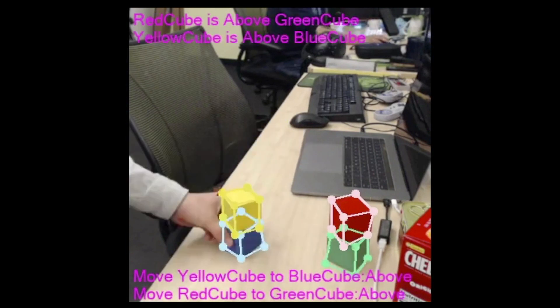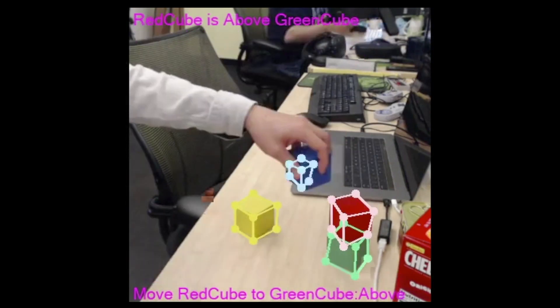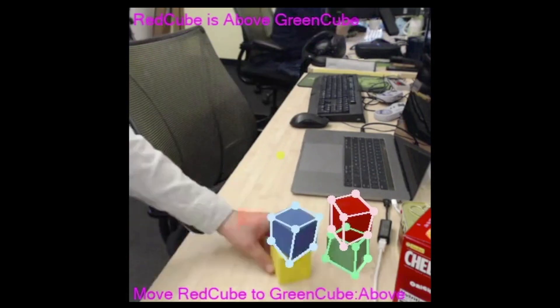Despite never observing a real image during training, the perception network reliably detects the bounding cuboids of objects in real images, even under severe occlusions.